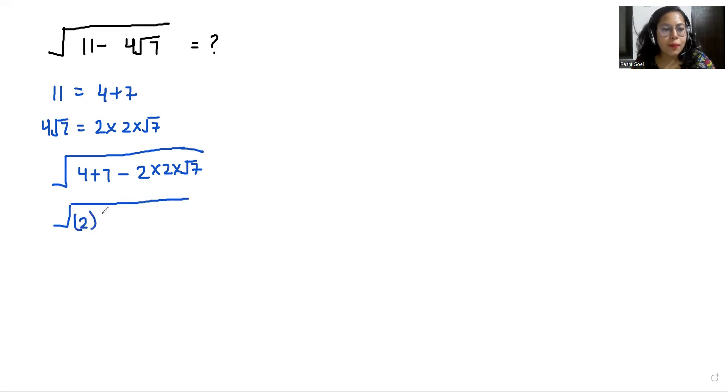So 2² and 7 we can write it as (√7)² - 2 × 2 × √7.